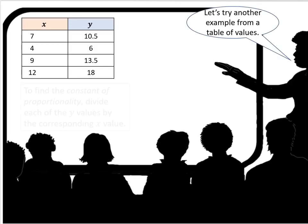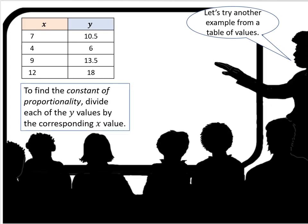Let's try another example from a table of values. Here we have x and y values. To find the constant of proportionality, divide each of the y values by the corresponding x value.